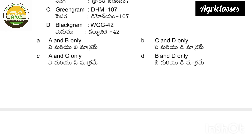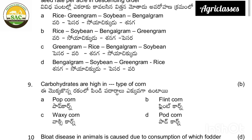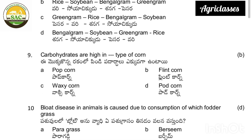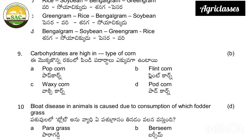The correct answer is C and D — both are wrongly matched. Also, carbohydrates are high in flint corn.